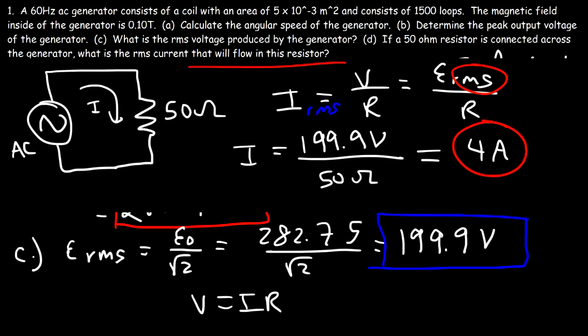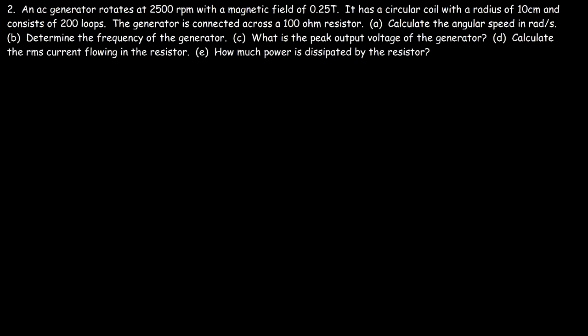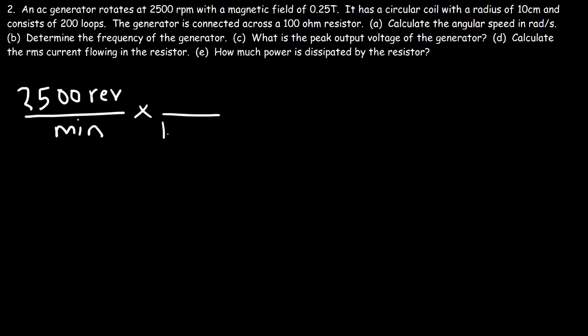Problem two: an AC generator rotates at 2500 RPM with a magnetic field of 0.25 Tesla. It has a circular coil with a radius of 10 centimeters and 200 loops, connected across a 100 ohm resistor. To calculate the angular speed in radians per second, we start with 2500 RPM. One revolution equals 2π radians, and one minute equals 60 seconds, so we can cancel the units.